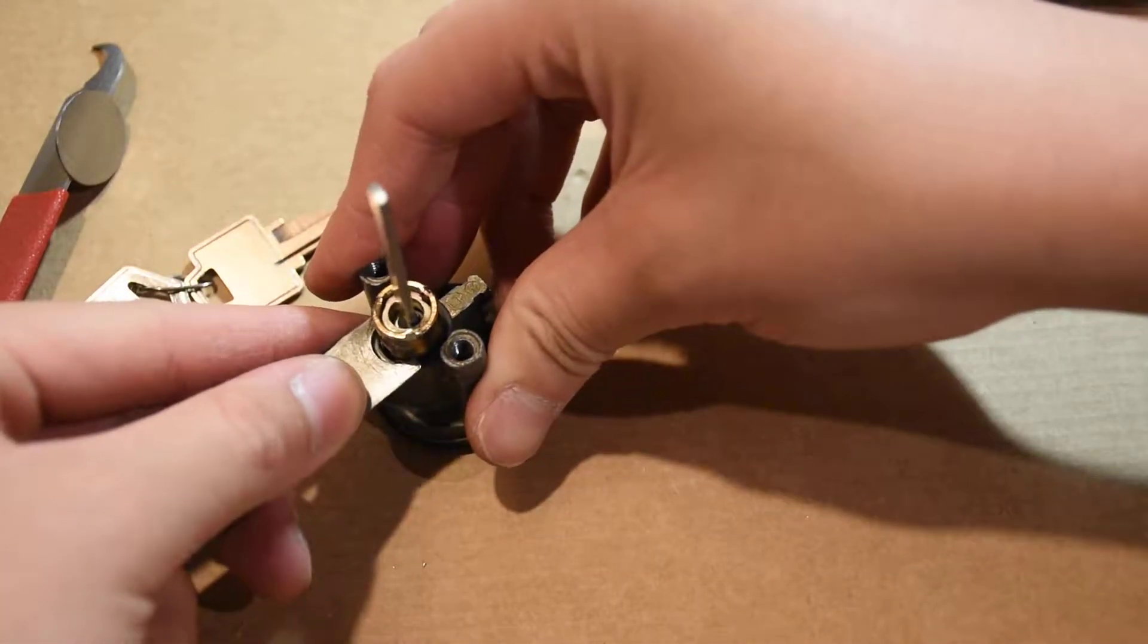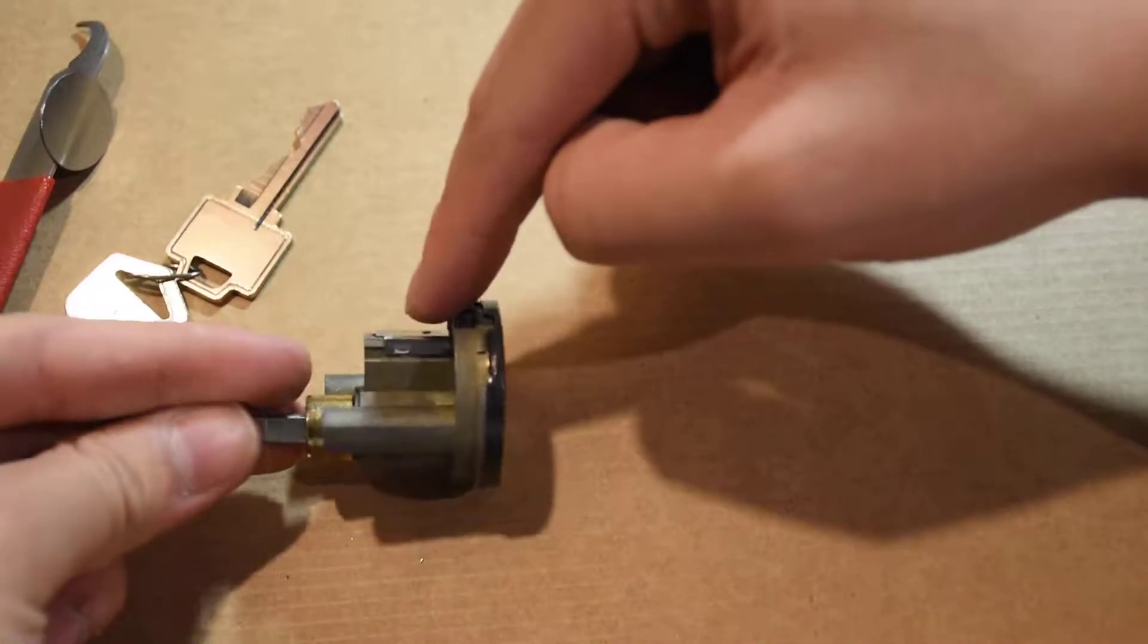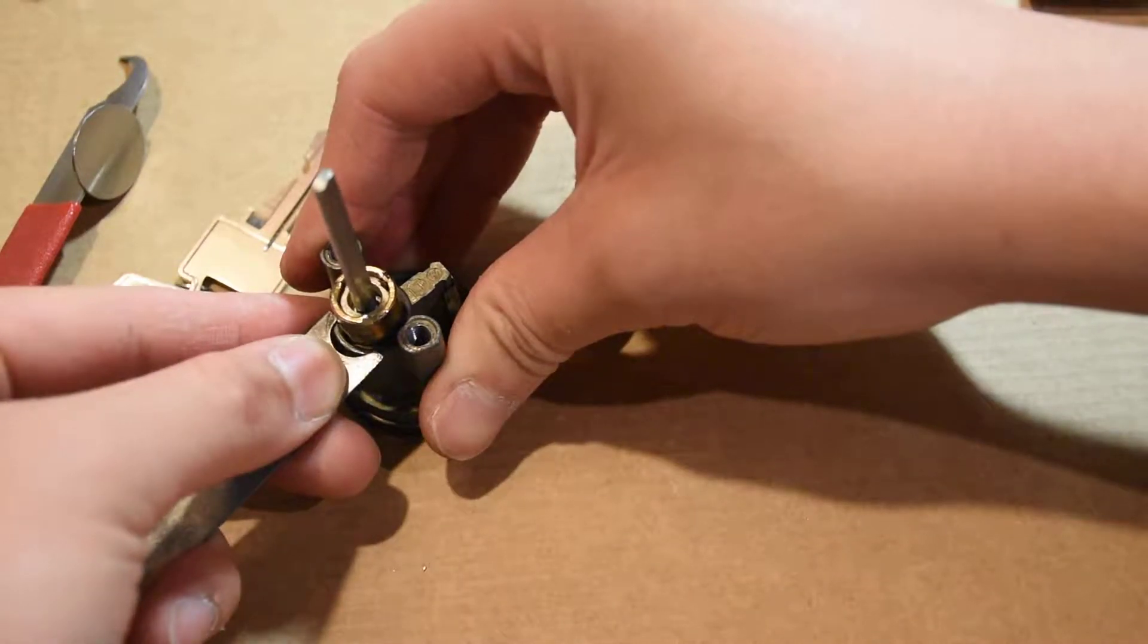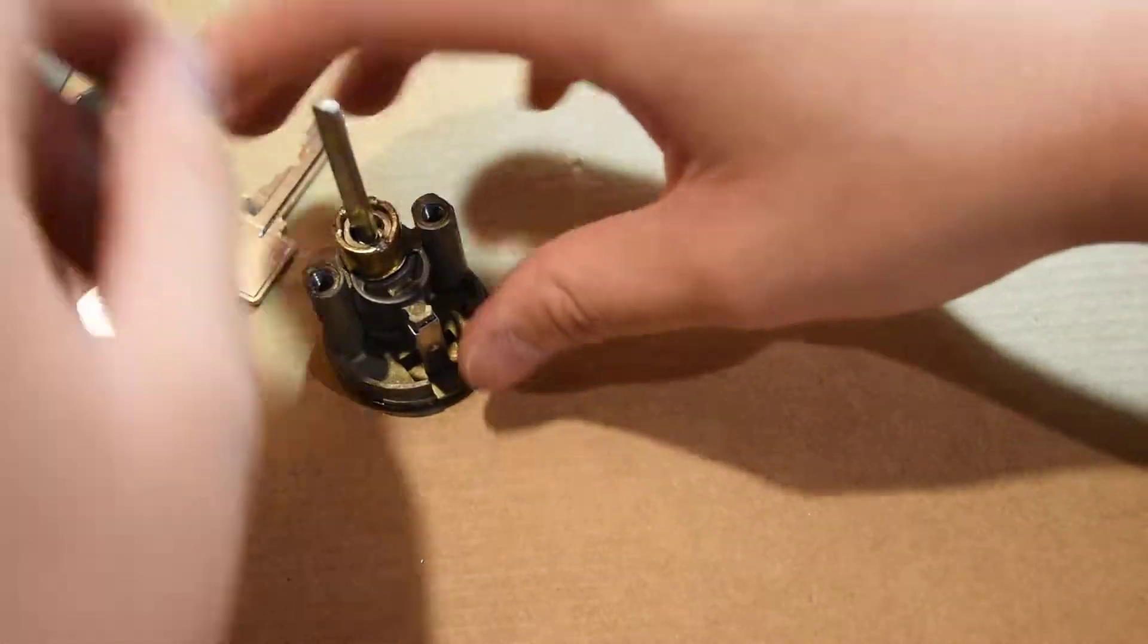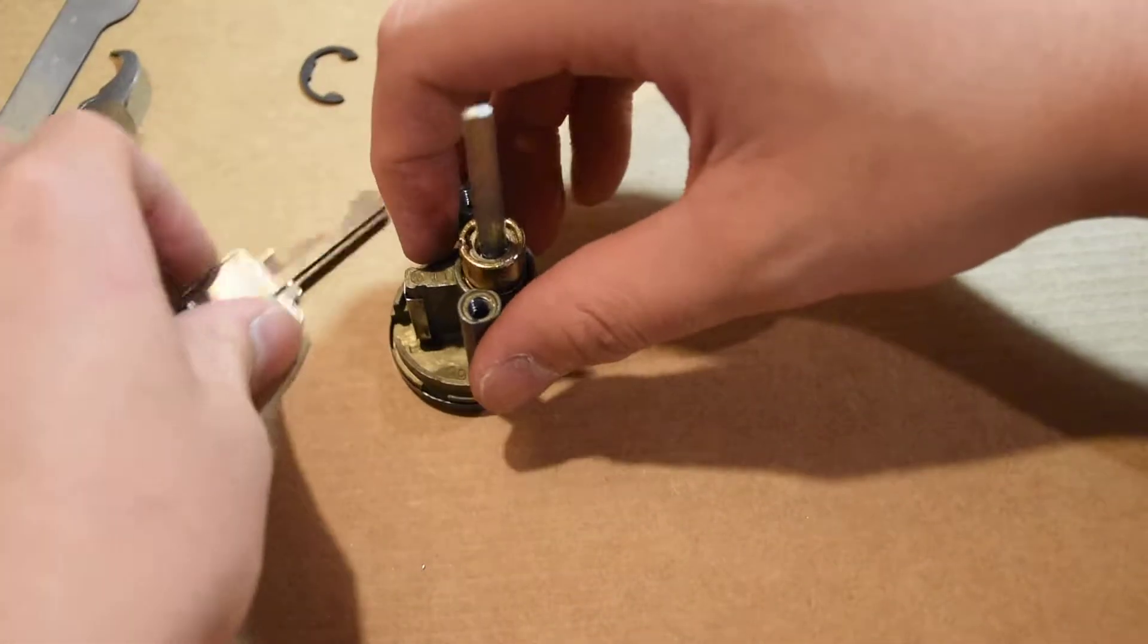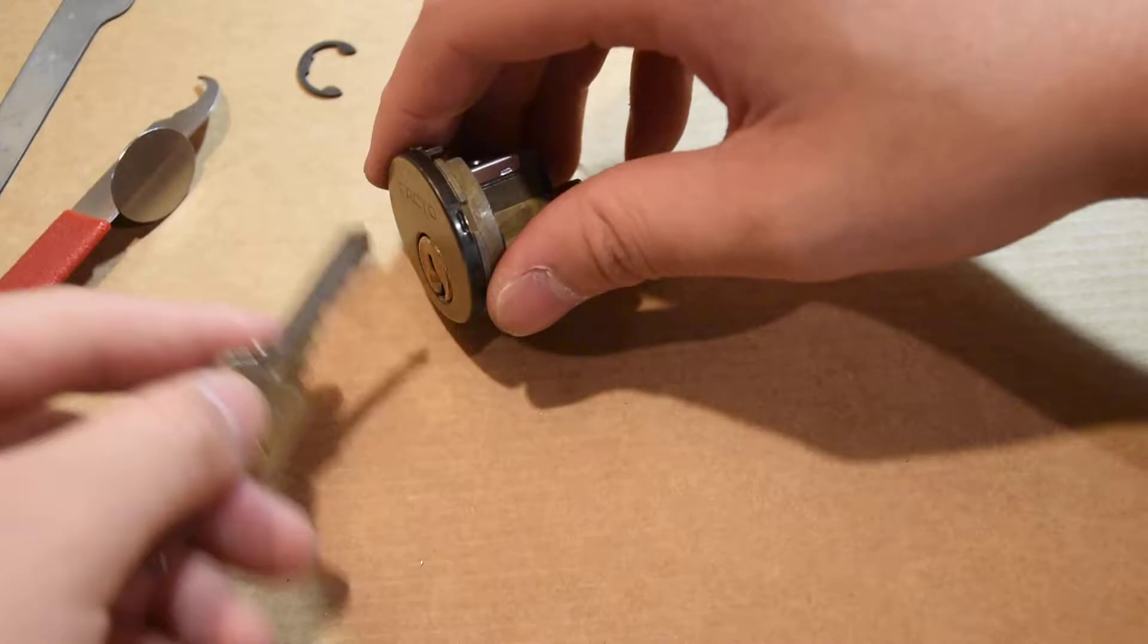As you probably already know, with any pin tumbler lock, we have driver pins on the top and springs, and we have key pins on the bottom. When the key is correct, it corresponds to the actual various lengths of the pins, and if it is correct, these pins will arrive to the shear line and the lock will open. If the key is not correct, the pins will not go to the shear line, and hence the lock will not open.